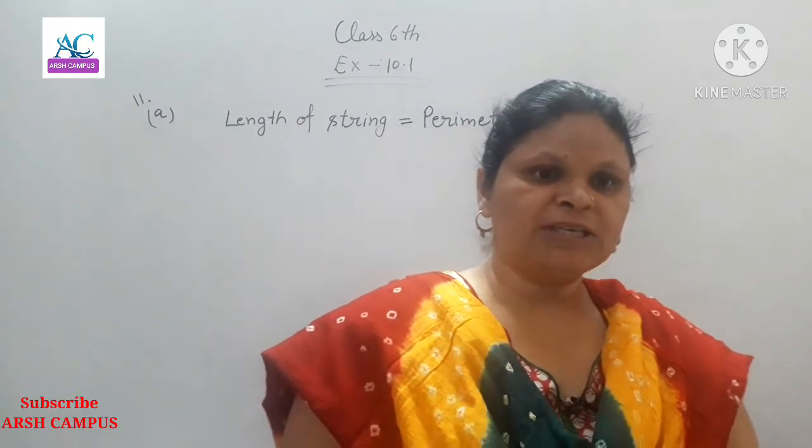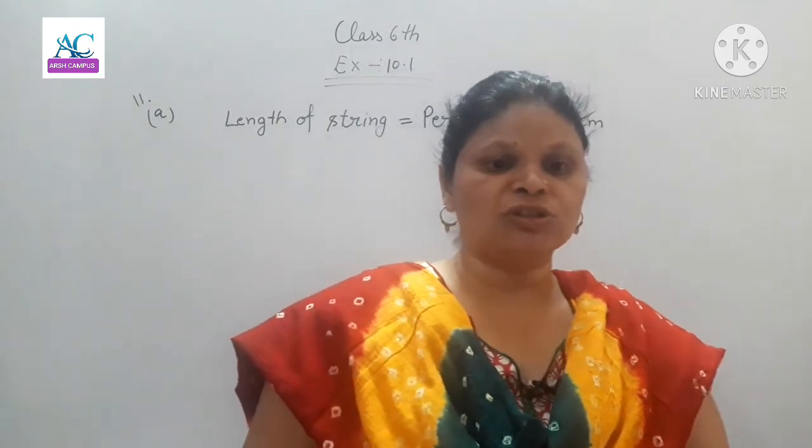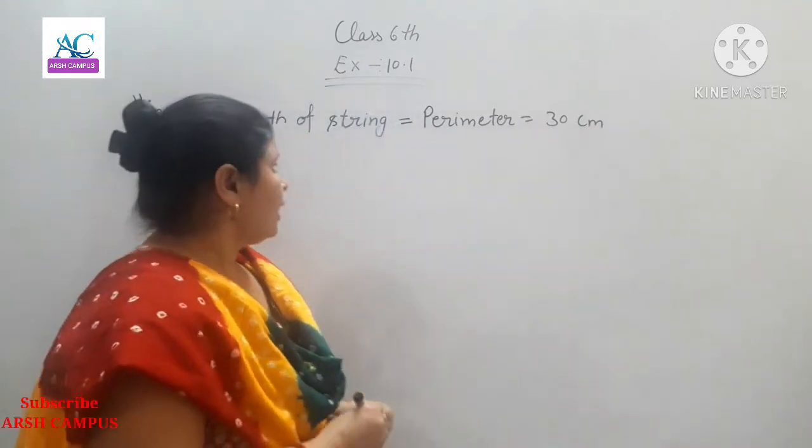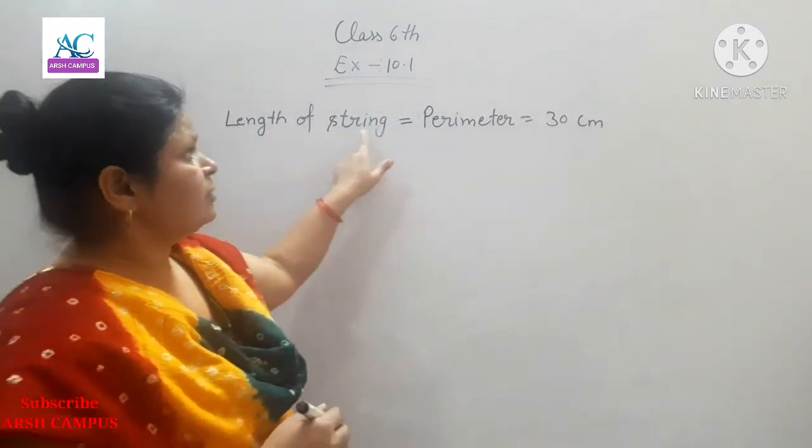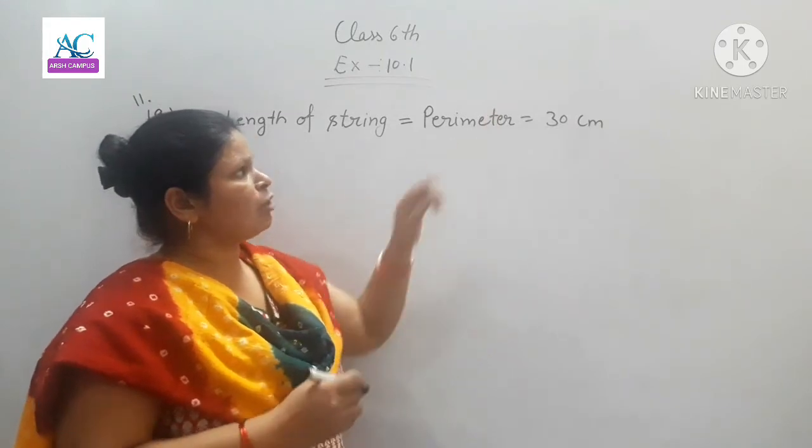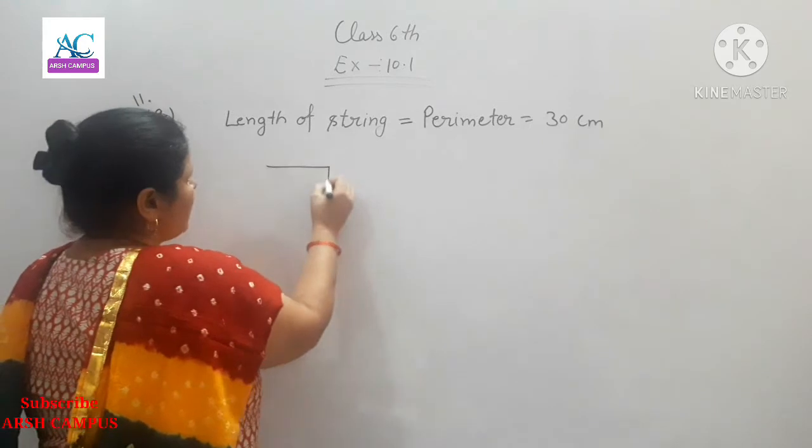When the string forms a square, we need to find the side of the square. The length of string is 30 cm, and we will consider it as the perimeter, because